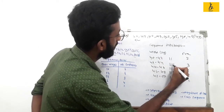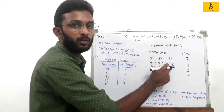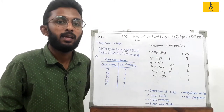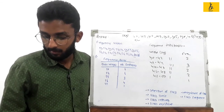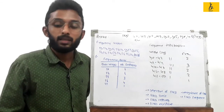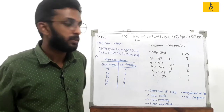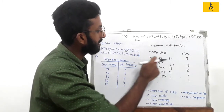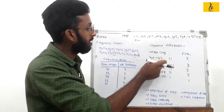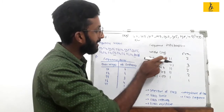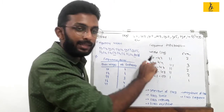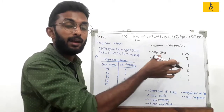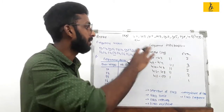There are two methods in frequency distribution: exclusive method and inclusive method. In the exclusive method, for a class like 40 to 42, the upper limit 42 is not included in that class. The value 42 belongs to the next class. So the upper limit of each class is excluded — that is why it is called the exclusive method.